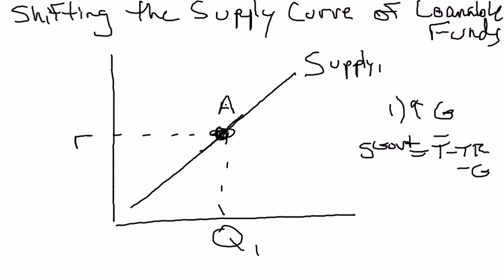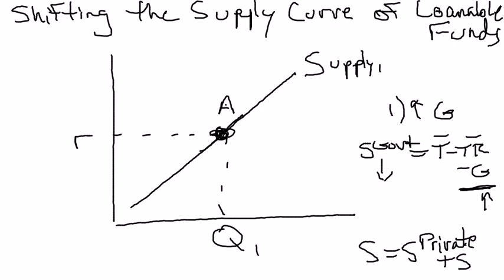Government savings equals taxes minus transfers minus government spending. We're keeping taxes and transfer payments constant, but increasing government spending. There's a negative sign in front of government spending, so if government spending increases, government savings has to fall. If government savings falls while we hold private savings constant, then national savings has to fall — meaning the quantity supplied of loanable funds decreases at this real interest rate. Let's call the new quantity Q2.